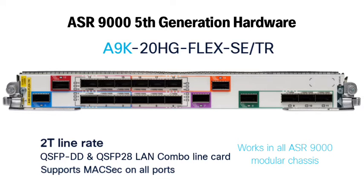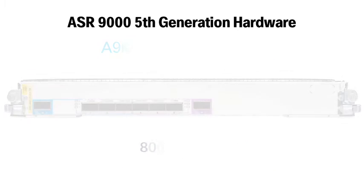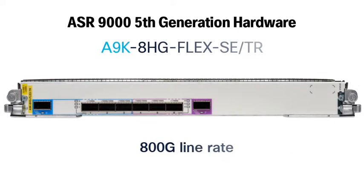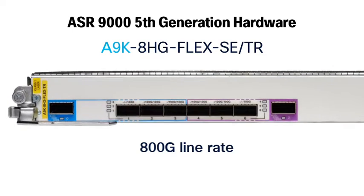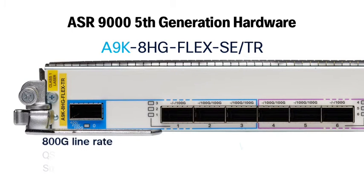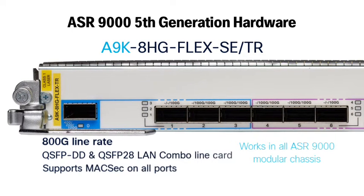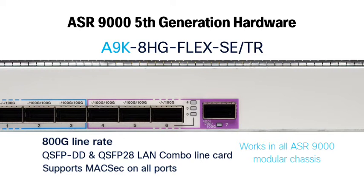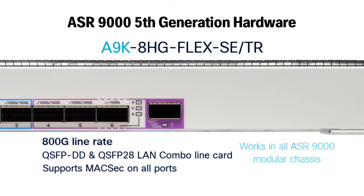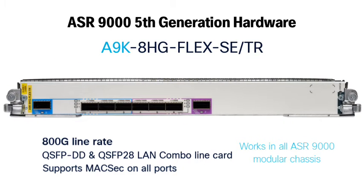The 800 gig flex card works exactly the same but uses only two port groups for a total of 800 gig throughput. Both of these flex cards come in SE and TR variants and are supported on all A99 and A9K type chassis.